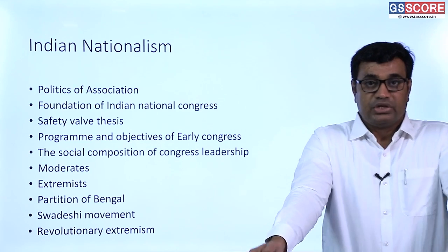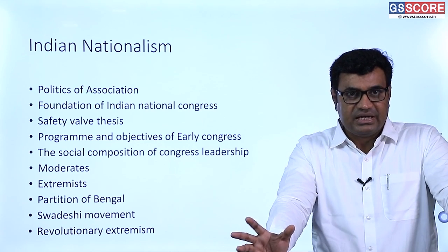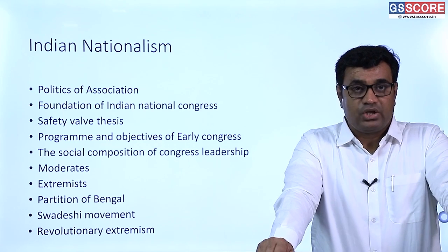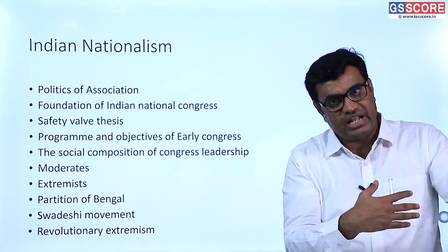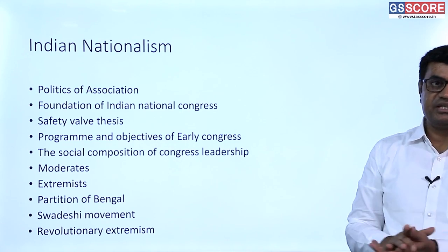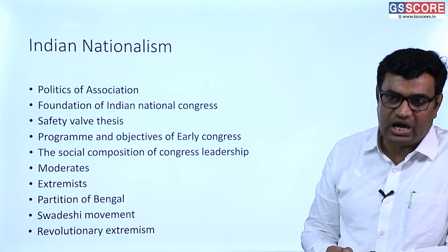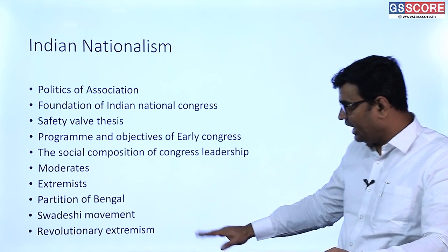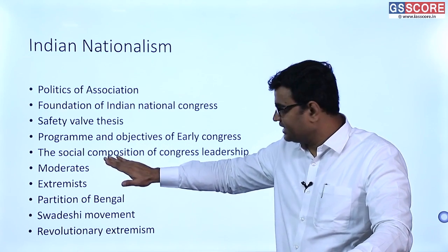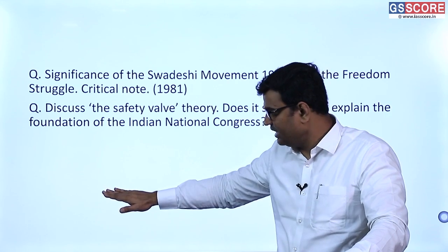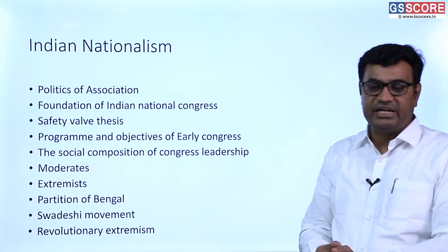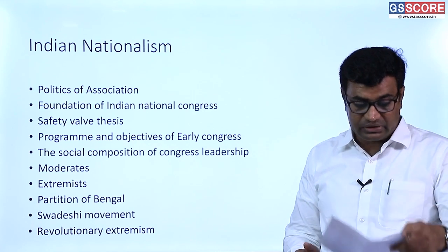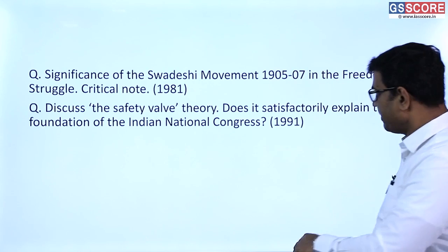When the Swadeshi movement ended without major objectives, discontented youth adopted violent methods against British officers — revolutionary extremism began. In 1908, Rash Bihari Bose and Prafulla Chaki decided to attack a British officer, marking the beginning of revolutionary extremism. Moderates believed in law and order, Extremists in passive resistance and mass agitation, and revolutionary extremists in violent actions against British authority.